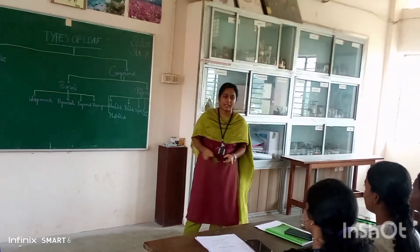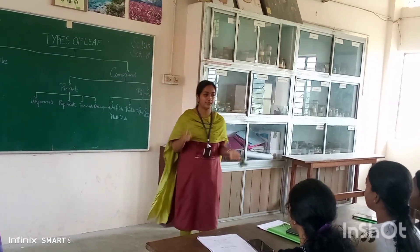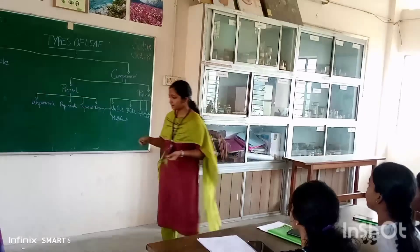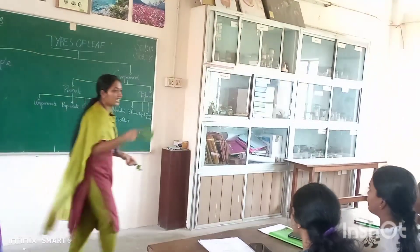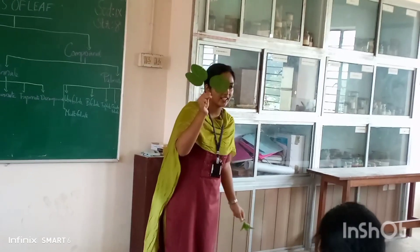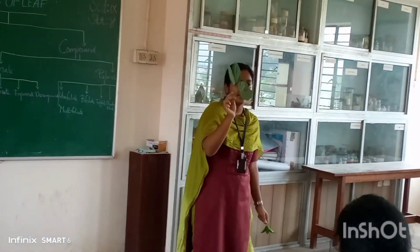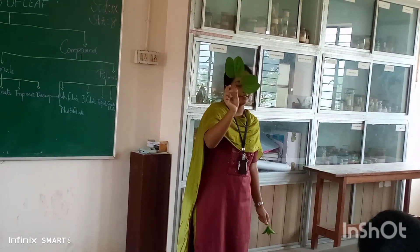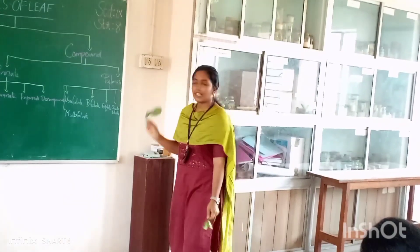What about bifoliate? Bifoliate means two leaflets are arranged at the top of the petiole. For example, Bauhinia — in bifoliate, the leaflets are arranged at the top of the petiole.